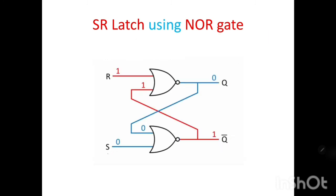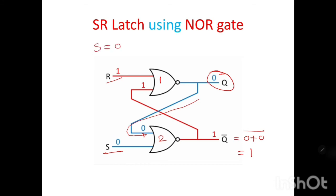When s = 0 and r = 1, one of the inputs to the first NOR gate is 1, so q becomes 0. This 0 is applied to the second gate along with 0, and complementing gives q-bar = 1. So when s = 0, r = 1, q becomes 0 and q-bar becomes 1 — this is the reset stage.